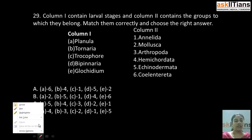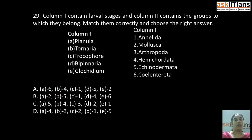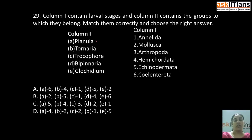Our next question: column one contains larval stages and column two contains the groups to which they belong — match them correctly. Column one: A) planula, B) tornaria, C) trochophore, D) bipinnaria, E) glochidium. Column two: 1) Annelida, 2) Mollusca, 3) Arthropoda, 4) Hemichordata, 5) Echinodermata, 6) Coelenterata. The correct answer: planula belongs to Coelenterata, tornaria belongs to Hemichordata, trochophore belongs to Annelida, bipinnaria belongs to Echinodermata, and glochidium belongs to Mollusca.